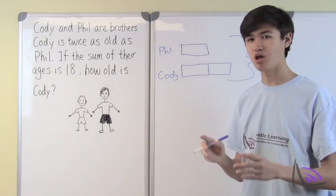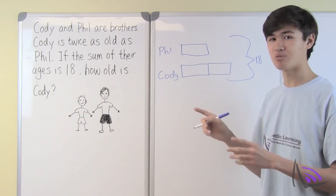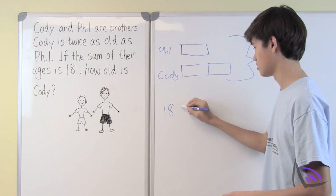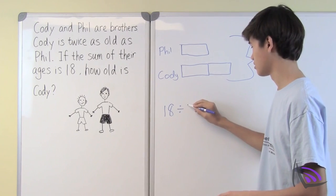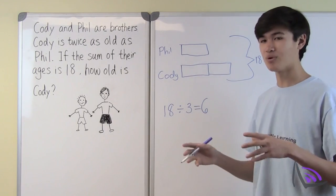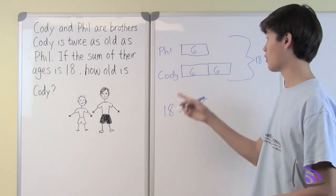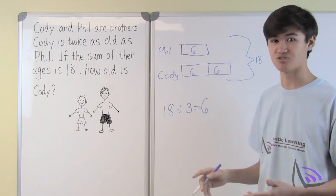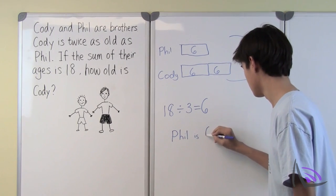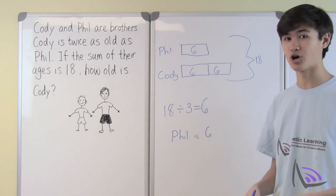Since each block is equivalent — each of them representing Phil's age — we can find out how many years each block represents by simply dividing 18 by 3. So 18 divided by 3 gives us 6, which is how many years each block represents. Since Phil only has one block, Phil is 6 years old. Since Cody has two blocks of six, Cody is 6 plus 6, or 12 years old.